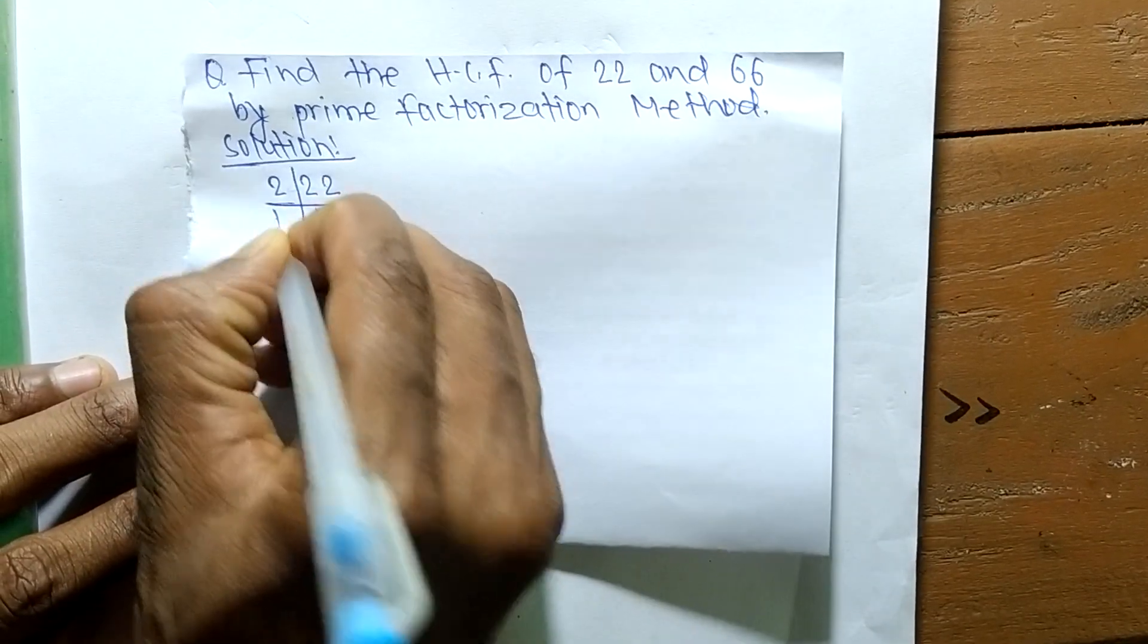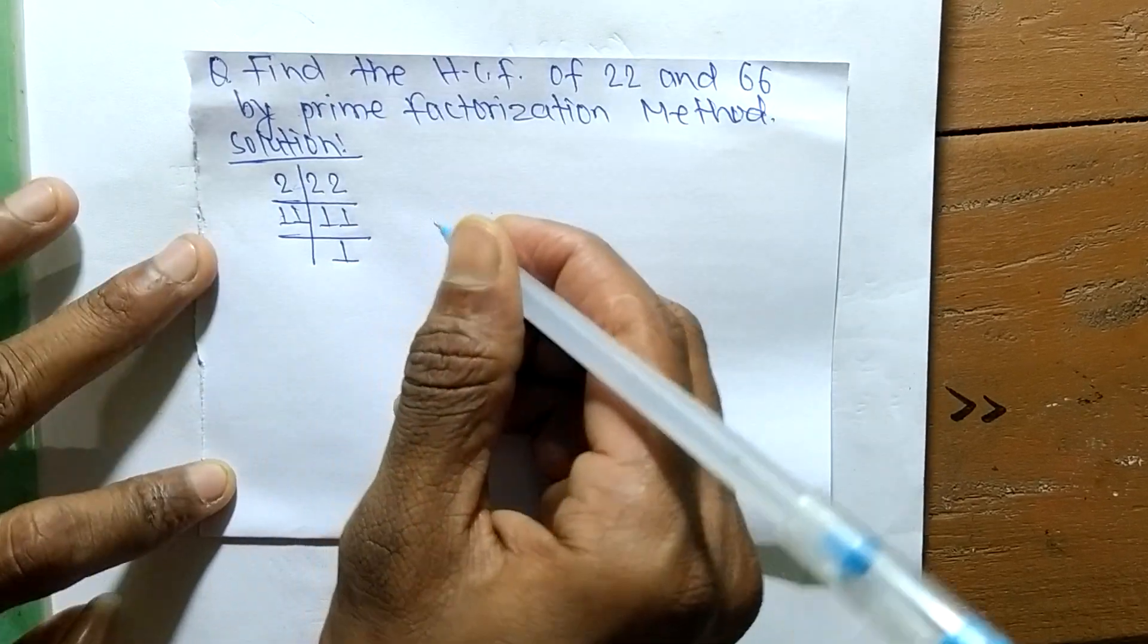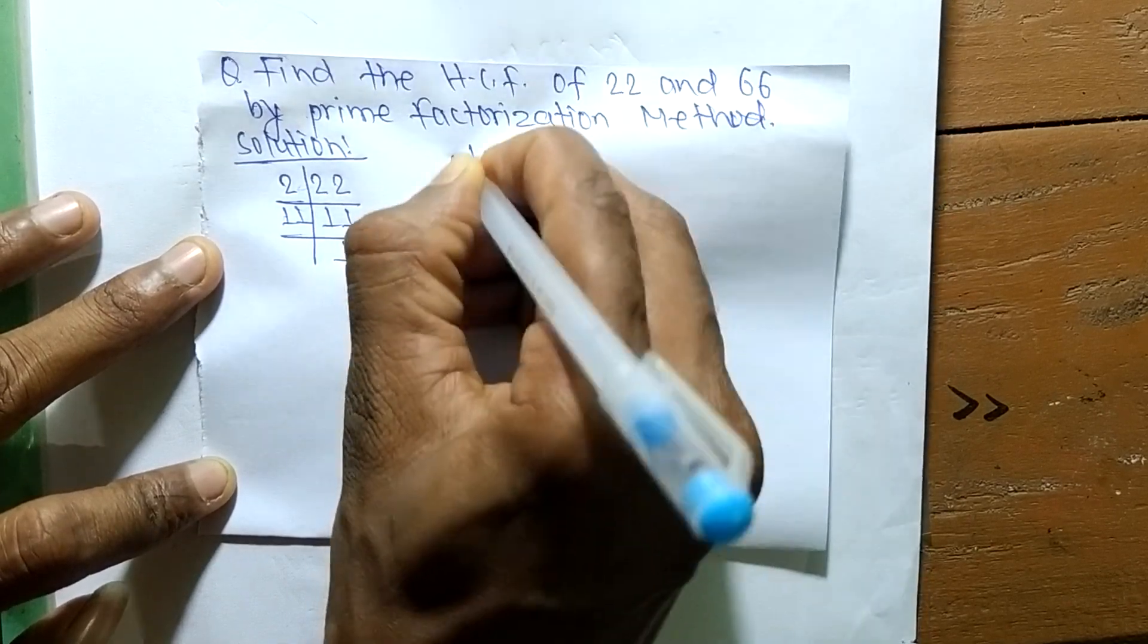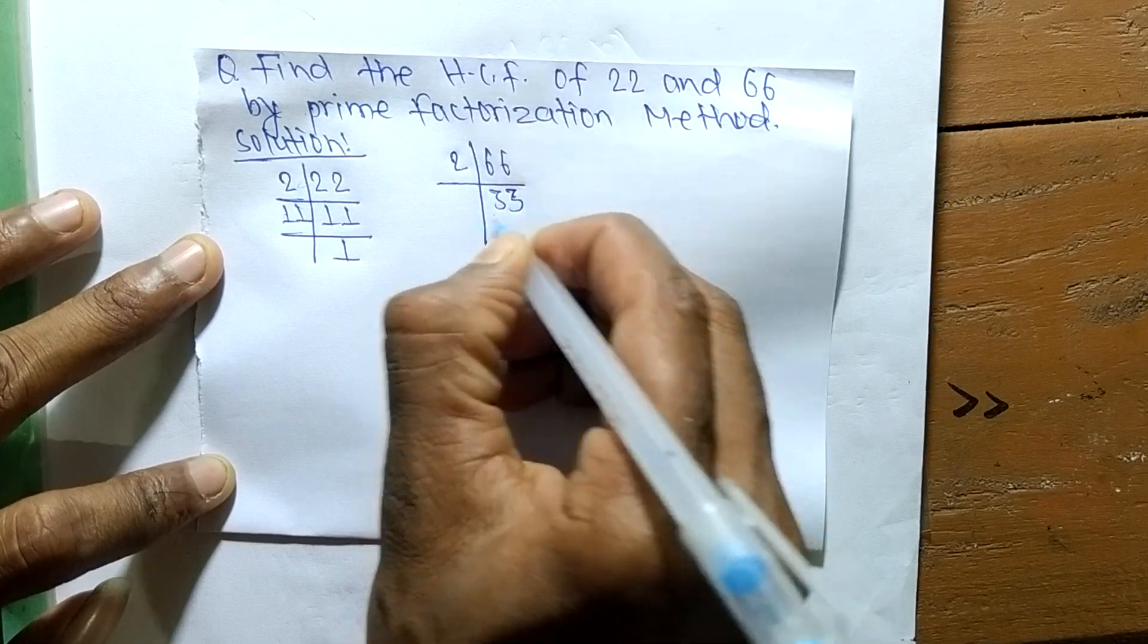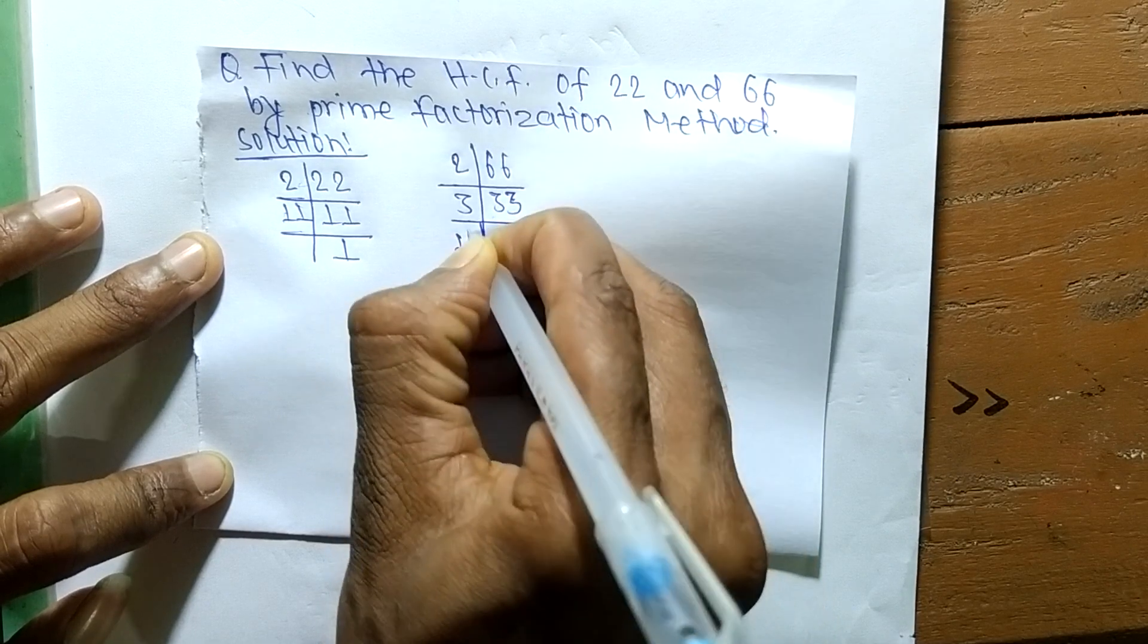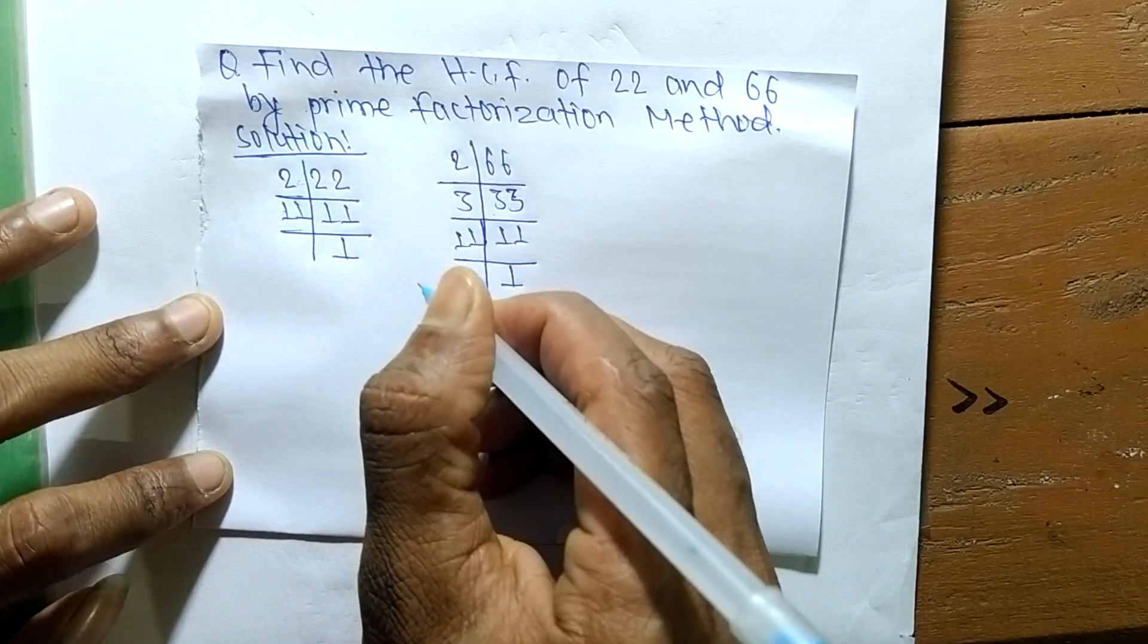22 and 11 times 1 means it is 11. Likewise, the prime factors of 66 are: it is 2 times 33, meaning 66, then 3 times 11 means 33, and 11 times 1 means it is 11.